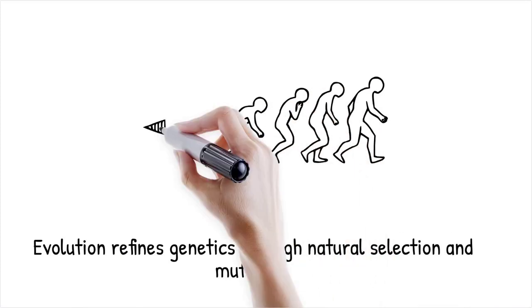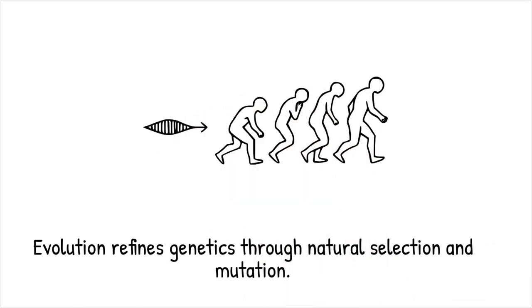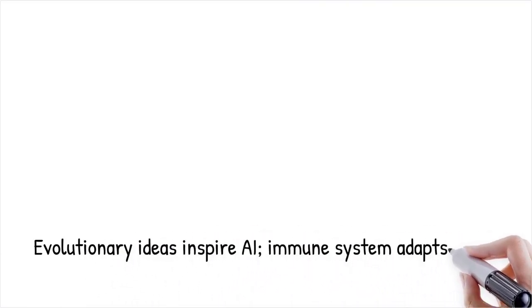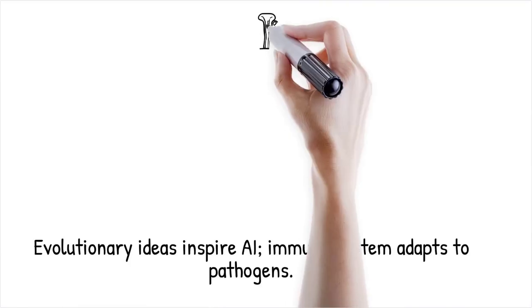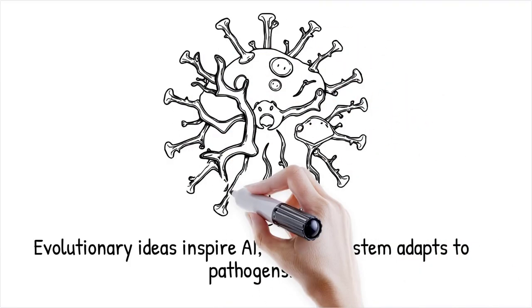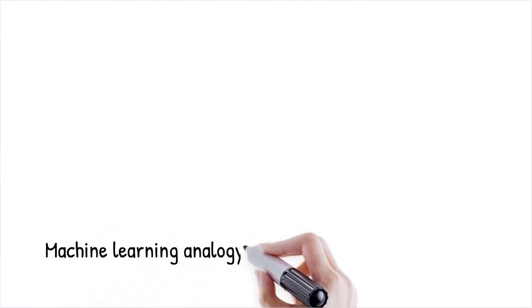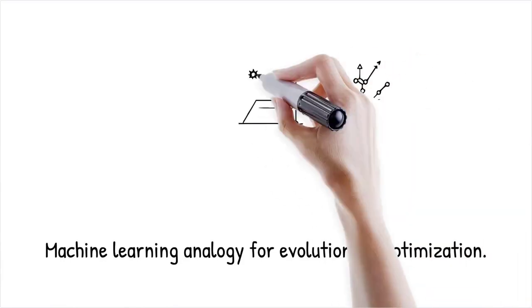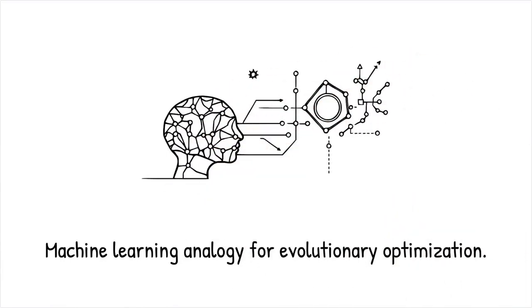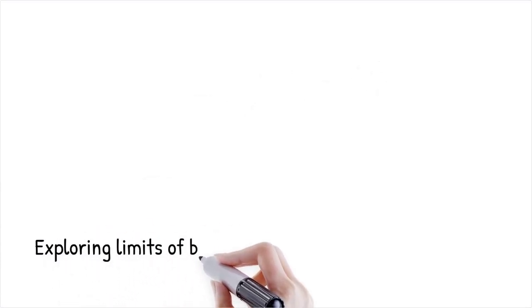Evolution acts as a decentralized algorithm that continuously refines genetic information through natural selection, mutation, and recombination. This iterative process enables life to adapt to changing environments without requiring an external designer. Evolutionary computation has inspired artificial intelligence models, demonstrating how complex problem-solving emerges from simple, repeated selection mechanisms. The immune system evolves in real-time, generating diverse antibodies to combat new pathogens through somatic hypermutation and clonal selection. It's like machine learning — by constantly testing and refining, the system optimizes its performance over generations.